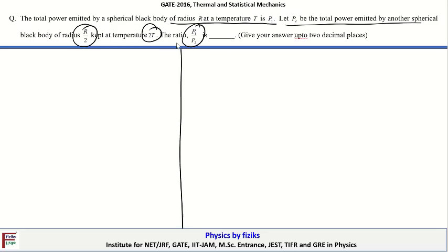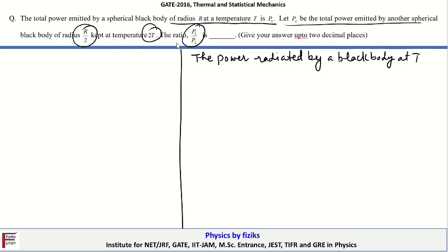First of all we must have an idea about the power radiated by a black body. The power radiated by a black body at temperature T and surface area A is given by: power is proportional to A times T to the power 4. Here A is the radiating area and T is the temperature of the black body.